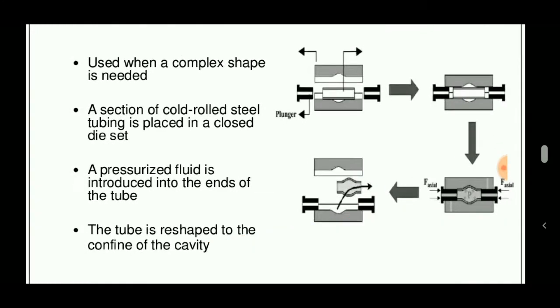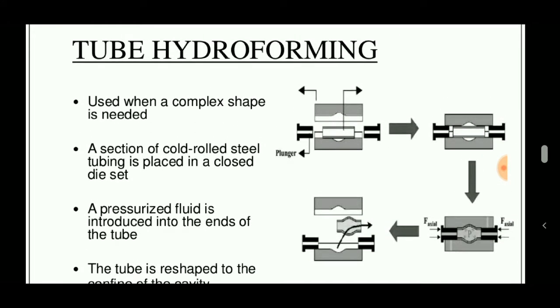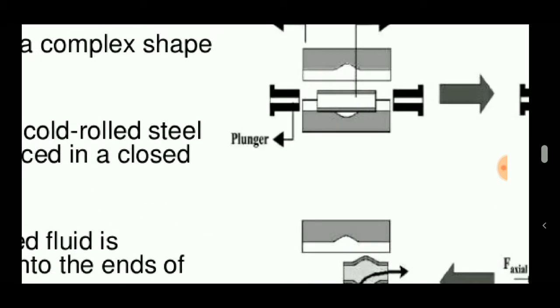Let's discuss tube hydroforming. It is a method in which a steel tube or tubes made of other materials are placed between molds containing a cavity. Then a plunger is used to support the tube. A pressurized liquid is forced inside the tube so that the tube bulges and takes up the shape of the mold cavity.